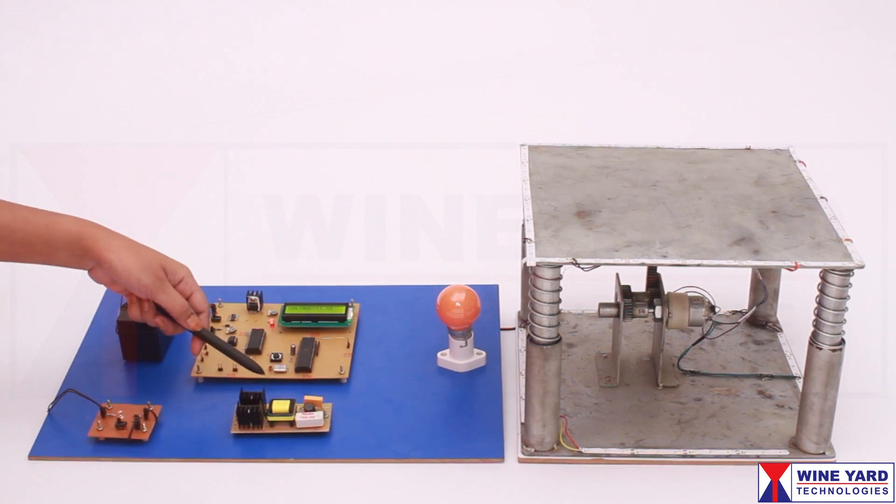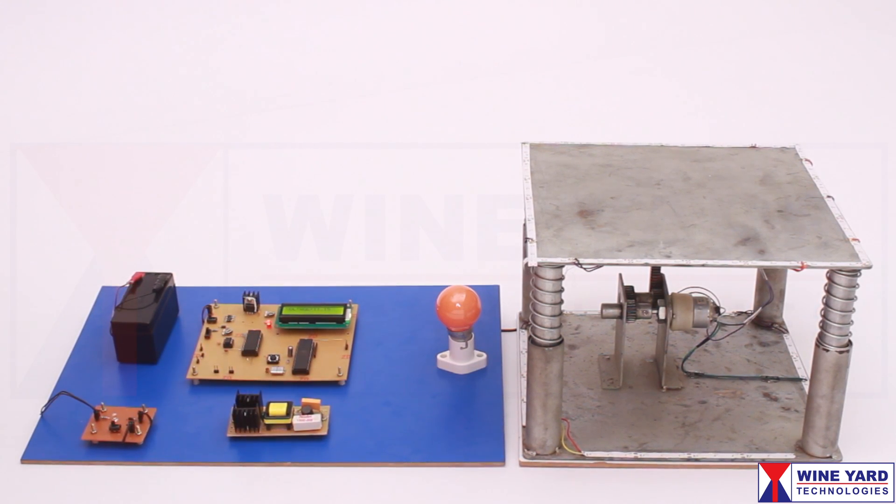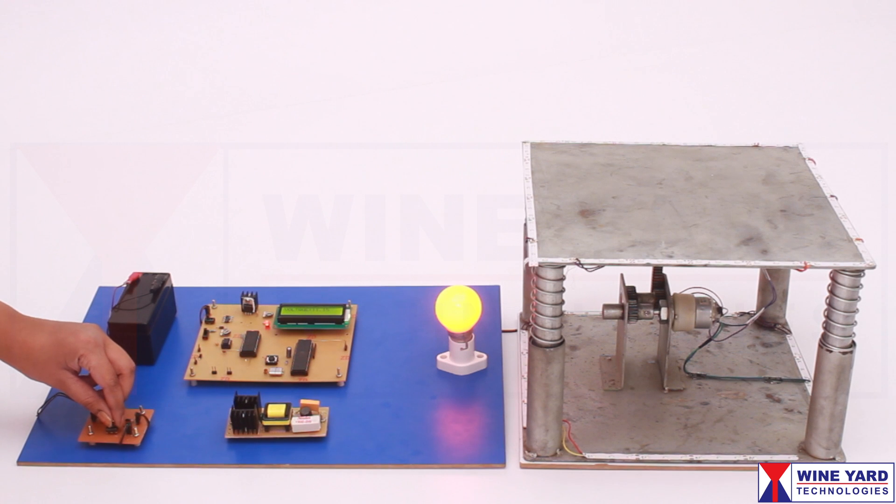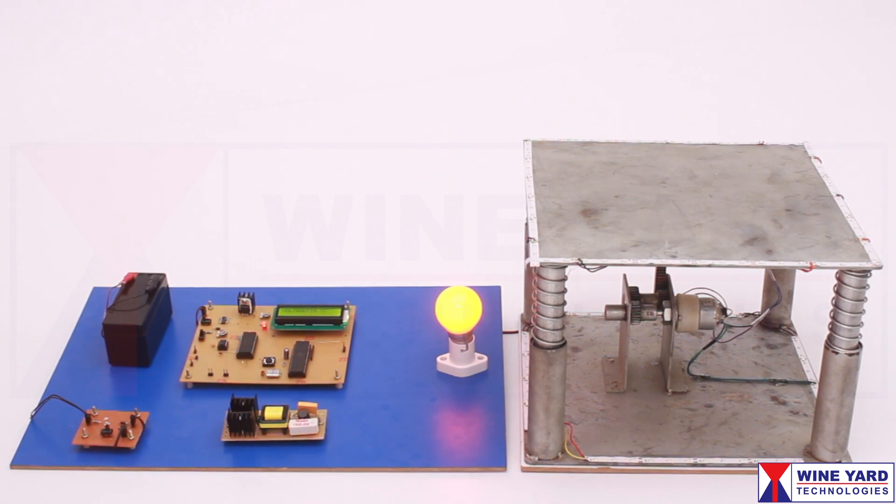This is an inverter circuit which converts the DC voltage to AC to power the AC loads. Slide the switch to power on the AC load. You can use AC loads up to 25 watts.